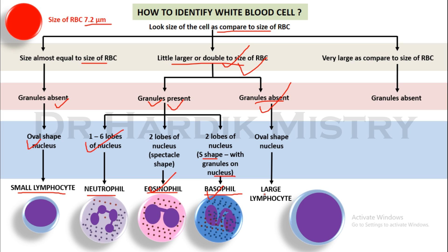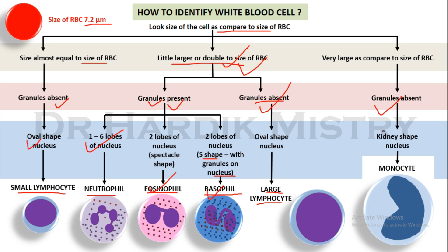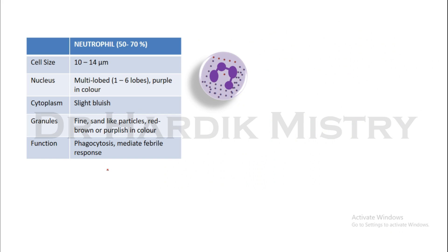If you find a cell which is very large as compared to the size of the RBC and granules are absent, check for the nucleus. If the nucleus is kidney-shaped, then this cell is the monocyte. The monocyte has a very large cell size, granules are absent, and a kidney-shaped nucleus. Neutrophil, eosinophil and basophil are the granulocytes, while small lymphocyte, large lymphocyte and monocyte are the agranulocytes. I hope from this flowchart you are able to understand and identify different types of WBCs very easily. Now I am going to explain the characteristic features and specification of each cell in detail.